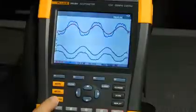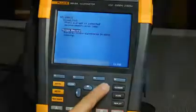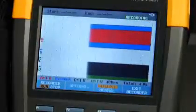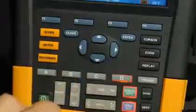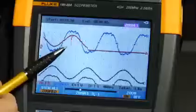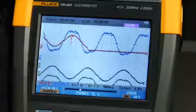Use scope record mode with deep memory to capture inrush currents or automation startup sequences. Scope record mode captures signal transitions with high resolution and accuracy you can count on.